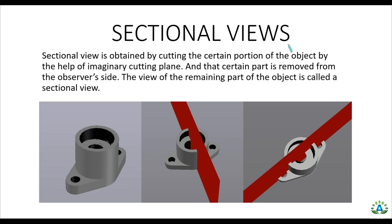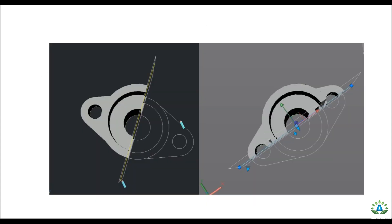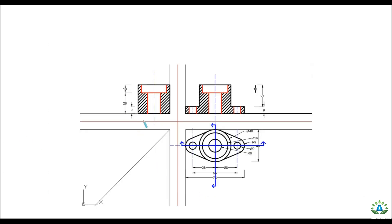First, let's understand what is a sectional view. Sectional view is obtained by cutting a certain portion of the object by the help of an imaginary cutting plane, and that certain part is removed from the observer's side. The view of the remaining part of the object is called the sectional view.